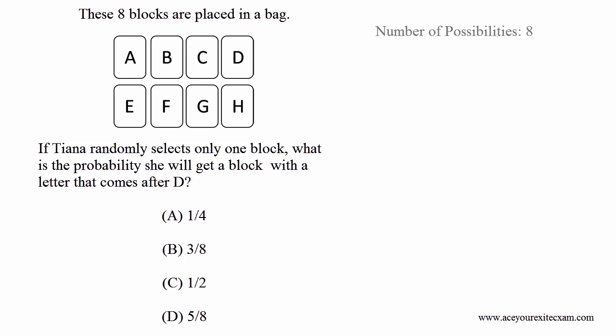In this problem, we are told that there are eight possible blocks that Tiana can choose from. In order to determine the probability that she will select a block with a letter that comes after D, we first need to identify how many blocks there are in the bag with letters that come after D.